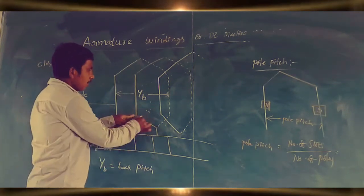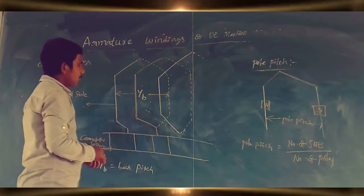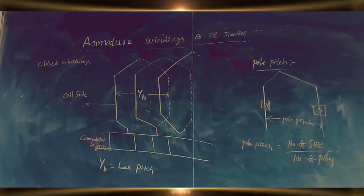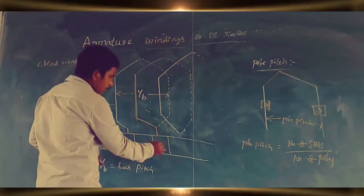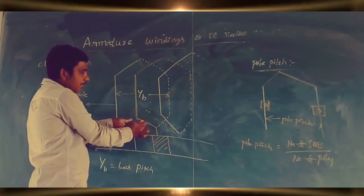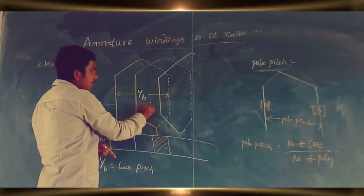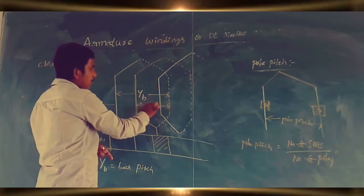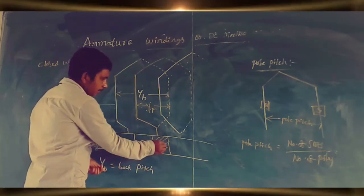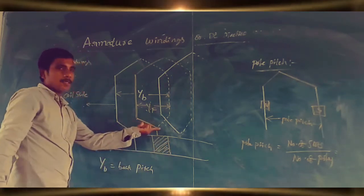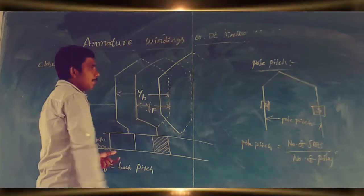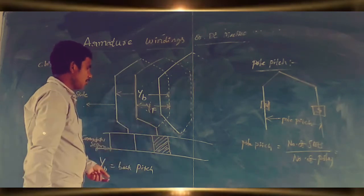Now we go for front pitch. The distance in terms of armature conductors between two coil sides that are connected to the same commutator segment is called front pitch. It is denoted by YF.